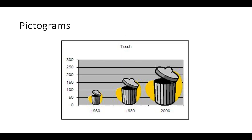This is a graph with pictograms — a cutesy thing people sometimes do in graphs, but they're not really great. Between 1960 and 2000, the amount of trash people produced grew from 100 tons to about 250 tons — though the units aren't labeled, which is another problem. Because pictograms are used, the graphic for 2000 is much larger than for 1960. It's two and a half times as tall, but about five or six times as big overall.